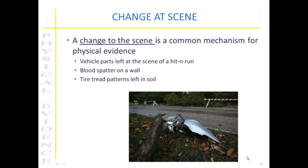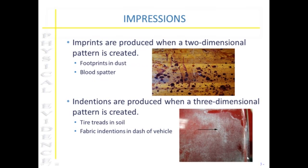Changes at a crime scene are a very common mechanism for the creation of physical evidence. Vehicle parts that are left at the scene of a hit and run are obviously changes to that scene. Blood spatters on a wall and tire tread patterns left in soil are also examples. Impressions are another way that physical evidence is produced — imprints are two-dimensional patterns, while indentions are more three-dimensional type patterns.